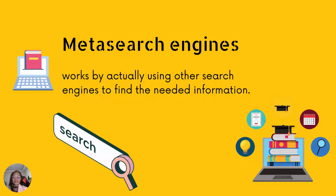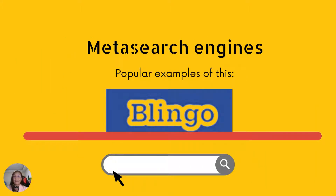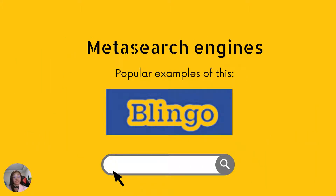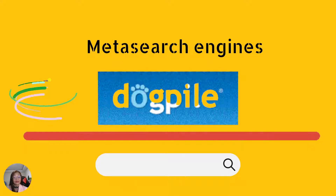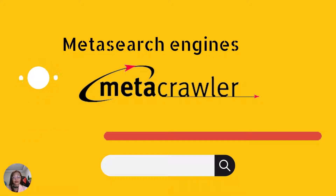Meta search engines work by actually using other search engines to find the needed information. It works the same way as when you use a website to help find the best deals on a particular product or, say, flight booking for your trip. Popular examples of meta search engines are Lingo, Dogpile, and Metacrawler.